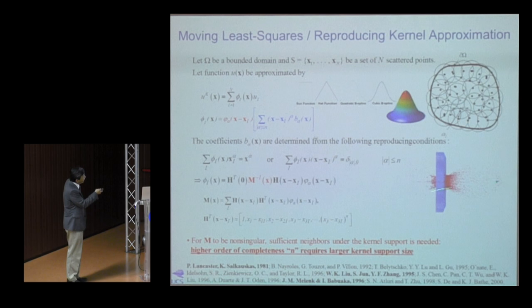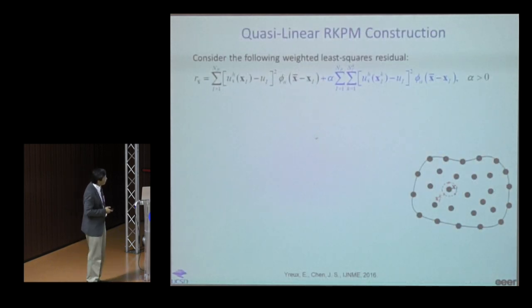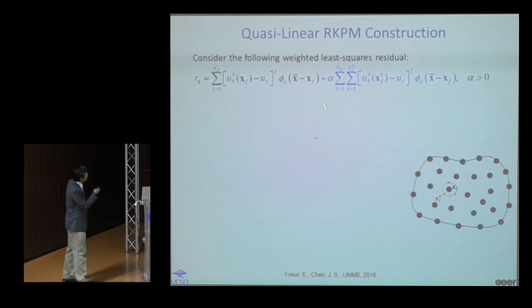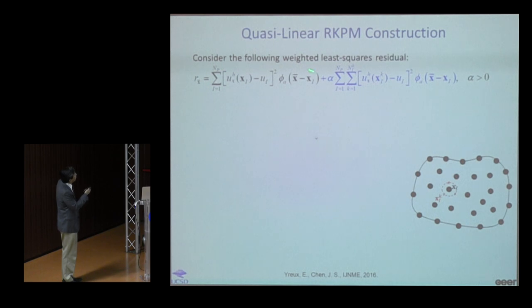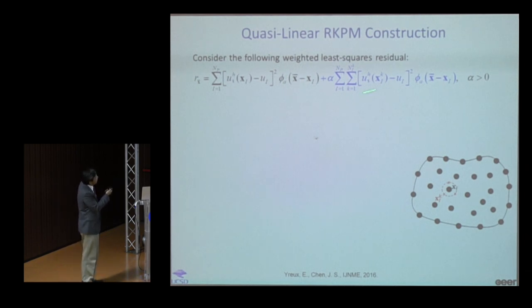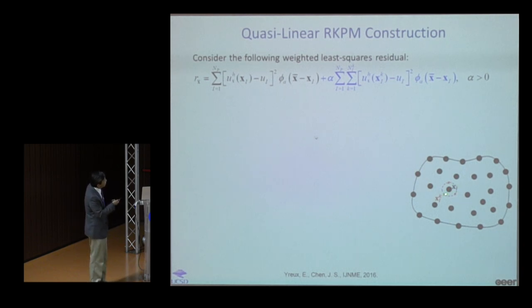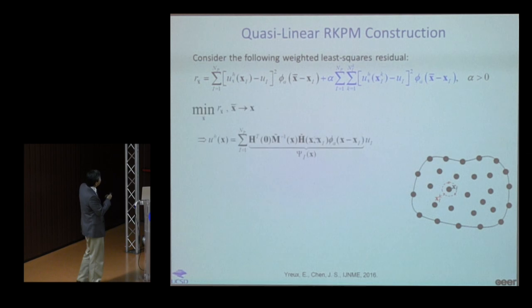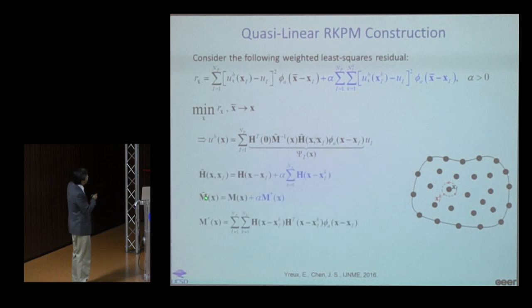We took a simple approach: add an additional term to the standard moving least squares residual. This term introduces a few extra evaluation points near the nodal point without adding degrees of freedom. The result is a modified moment matrix — the original plus this extra term — ensuring non-singularity.